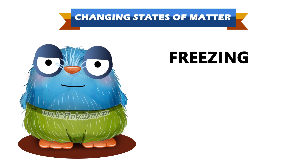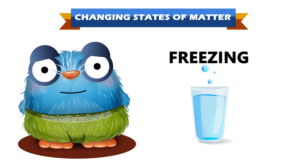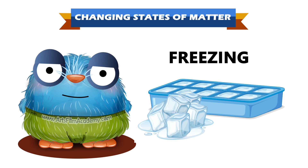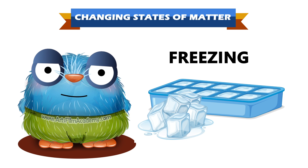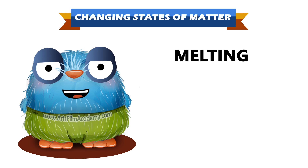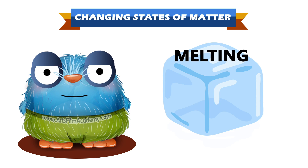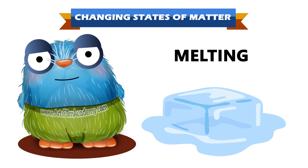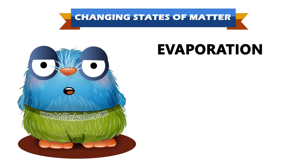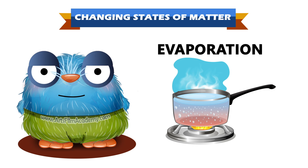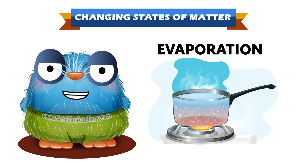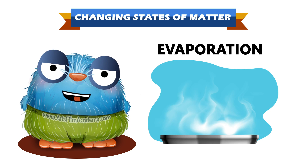Once more. Freezing — matter changes from liquid to solid. For example, water to ice cube. Melting — matter changes from solid to liquid. For example, ice cube to water. When water is heated, it turns into water vapor.